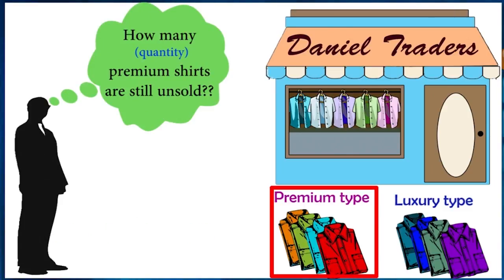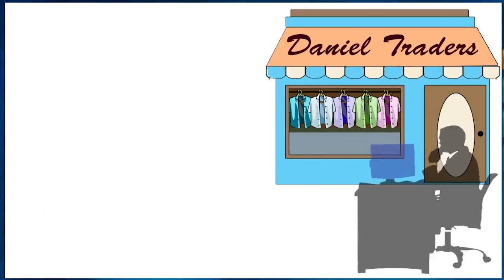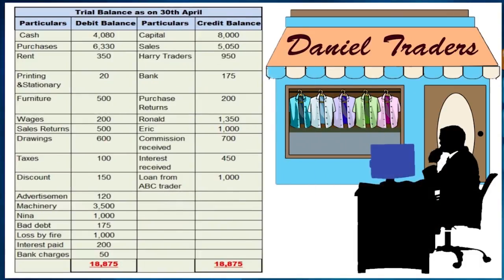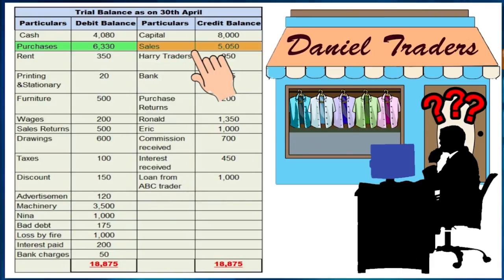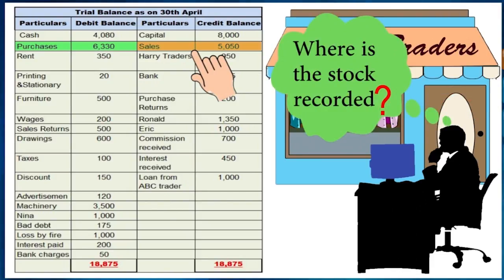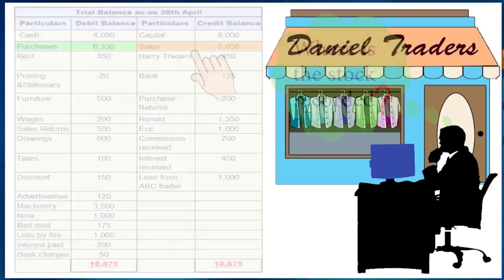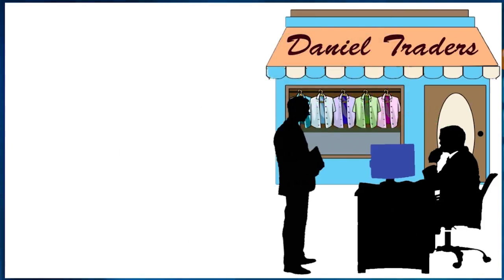So Daniel wanted to know what quantity of these premium shirts were still unsold. He went back to his desk and checked the trial balance we had prepared, but he was shocked — there was nothing mentioned about the stock on it. He could only see purchases and sales amounts, and was anxious about where the stock details had gone.